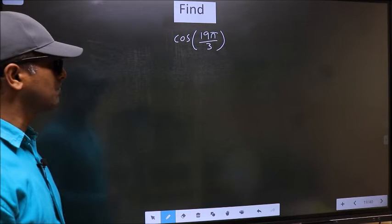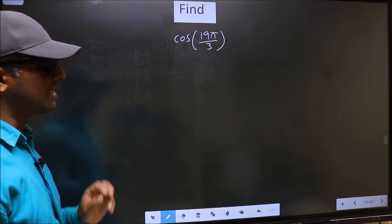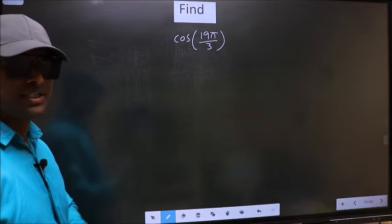Find cos 19π by 3. To find this, we should follow this method.